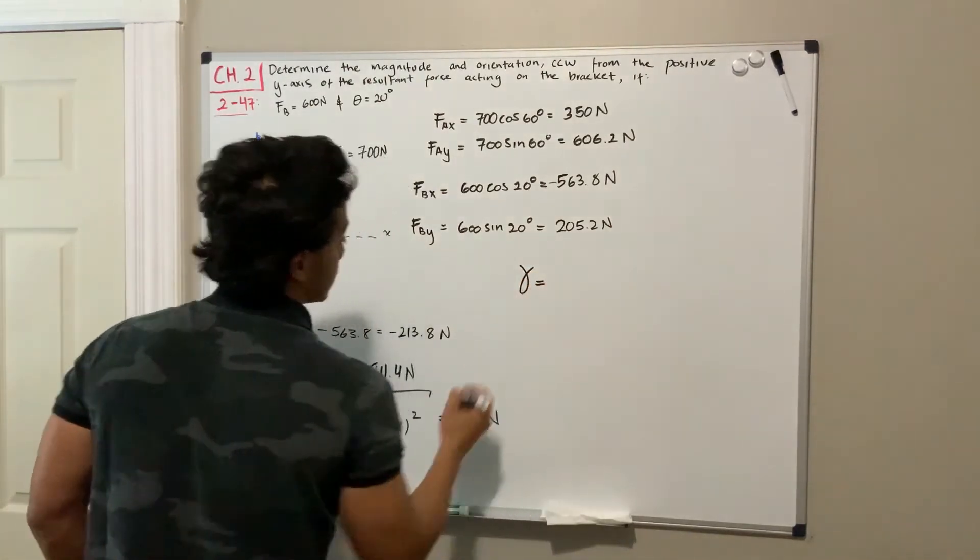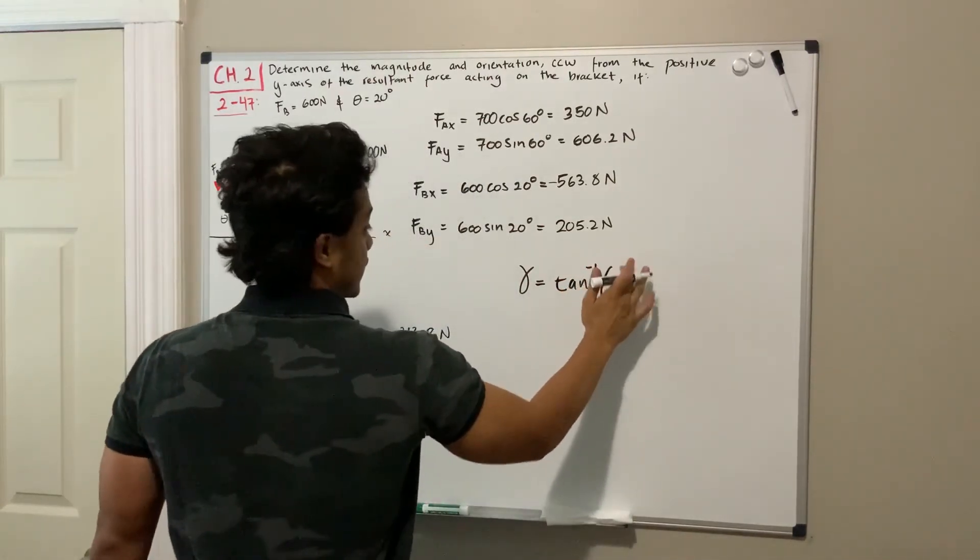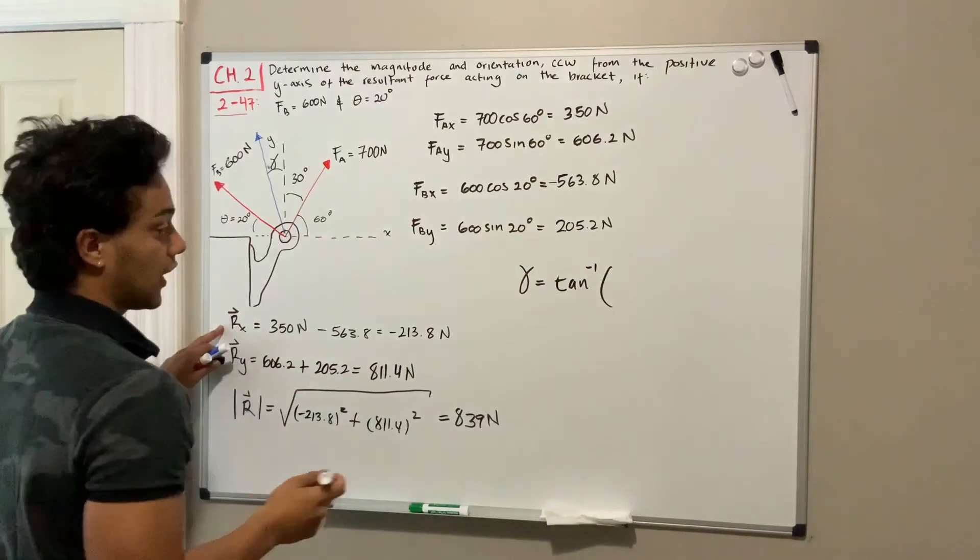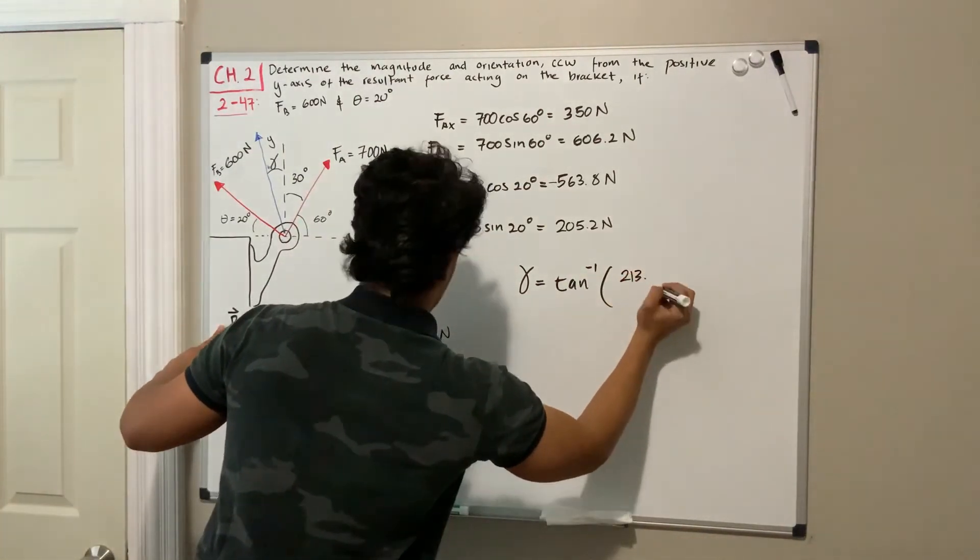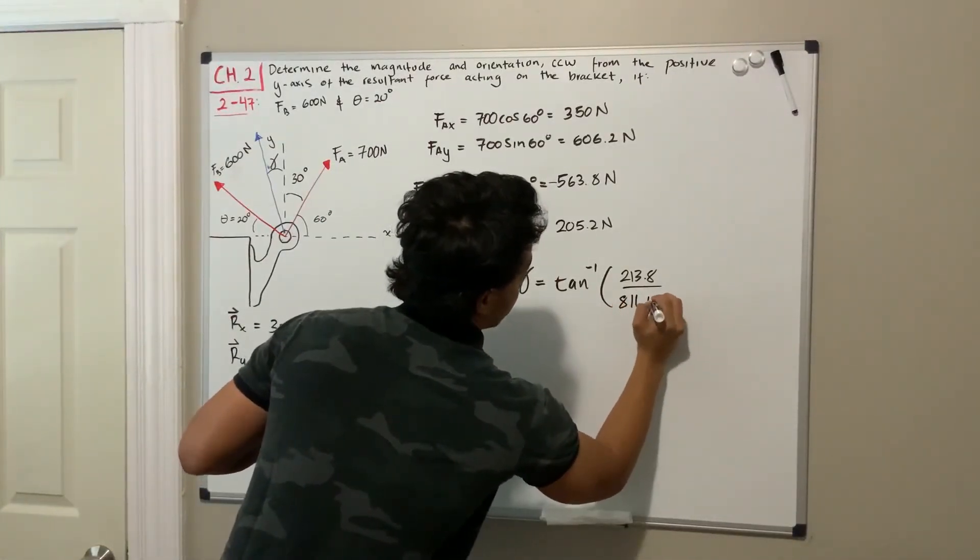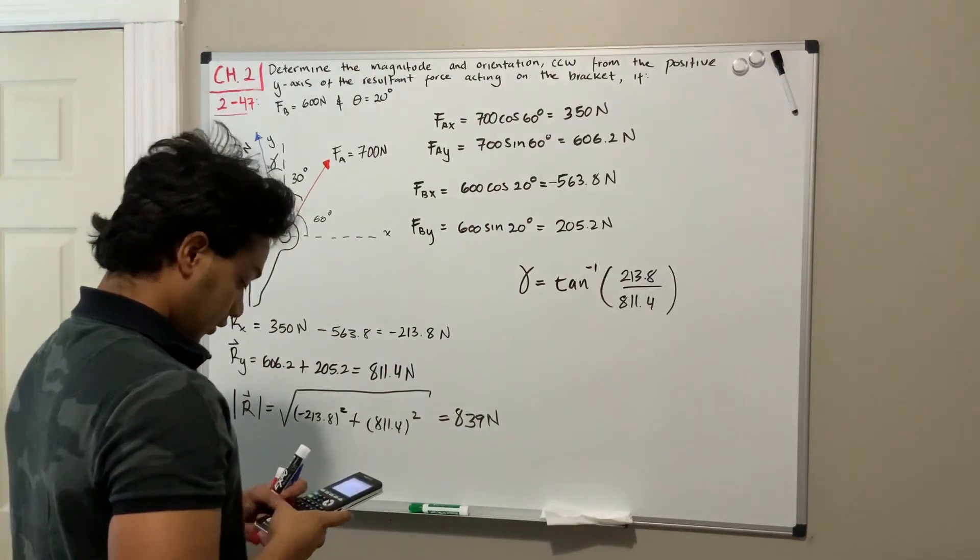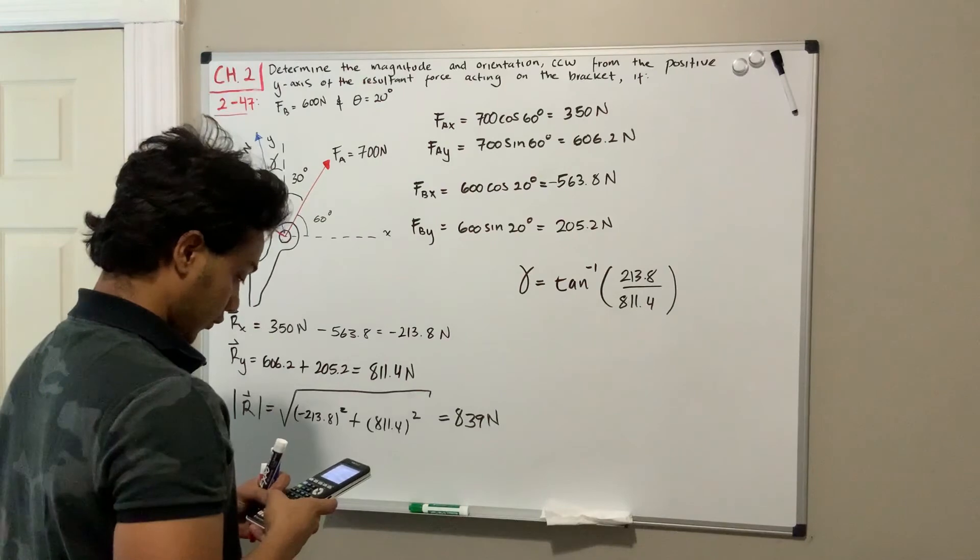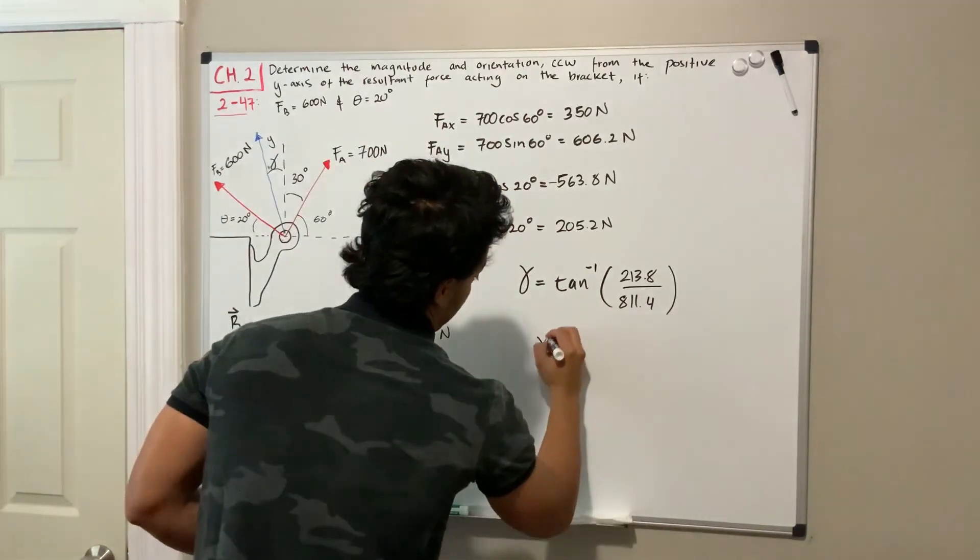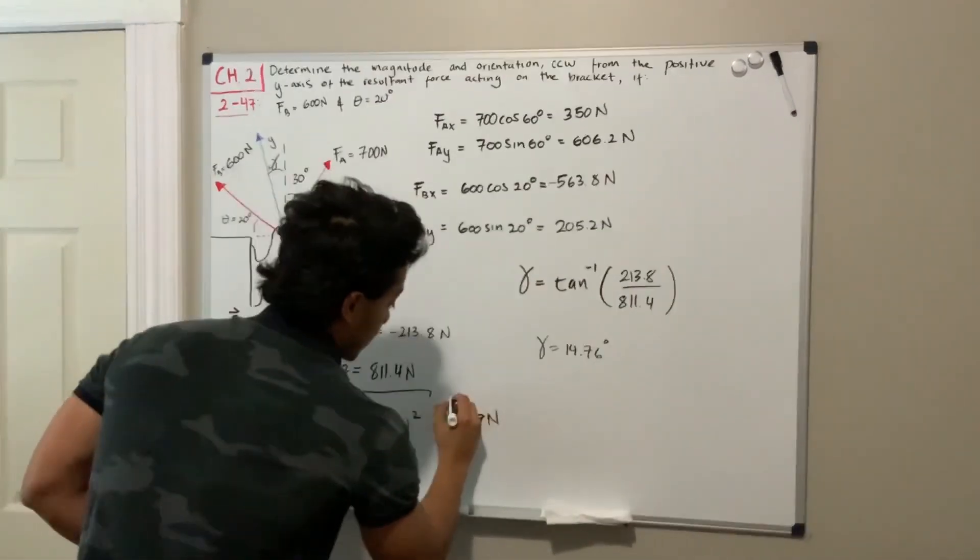So gamma is going to be equal to the inverse tangent. It should be opposite over adjacent, so the opposite in this case is the x value, 213.8, divided by the y value, 811.4. So gamma equals the inverse tangent of 213.8 divided by 811.4, which is 14.76 degrees. So this is the magnitude and the direction for our resultant.